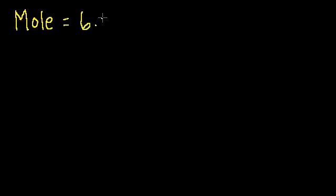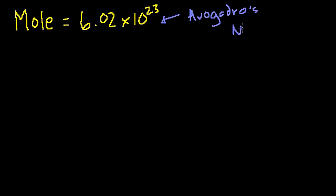A mole in chemistry is just a number. And the number is 6.02 times 10 to the 23. So it's a very huge number, and this is also called Avogadro's number. Maybe I'll do a video on Avogadro's number, but that's all you need to know. A mole is just a number.